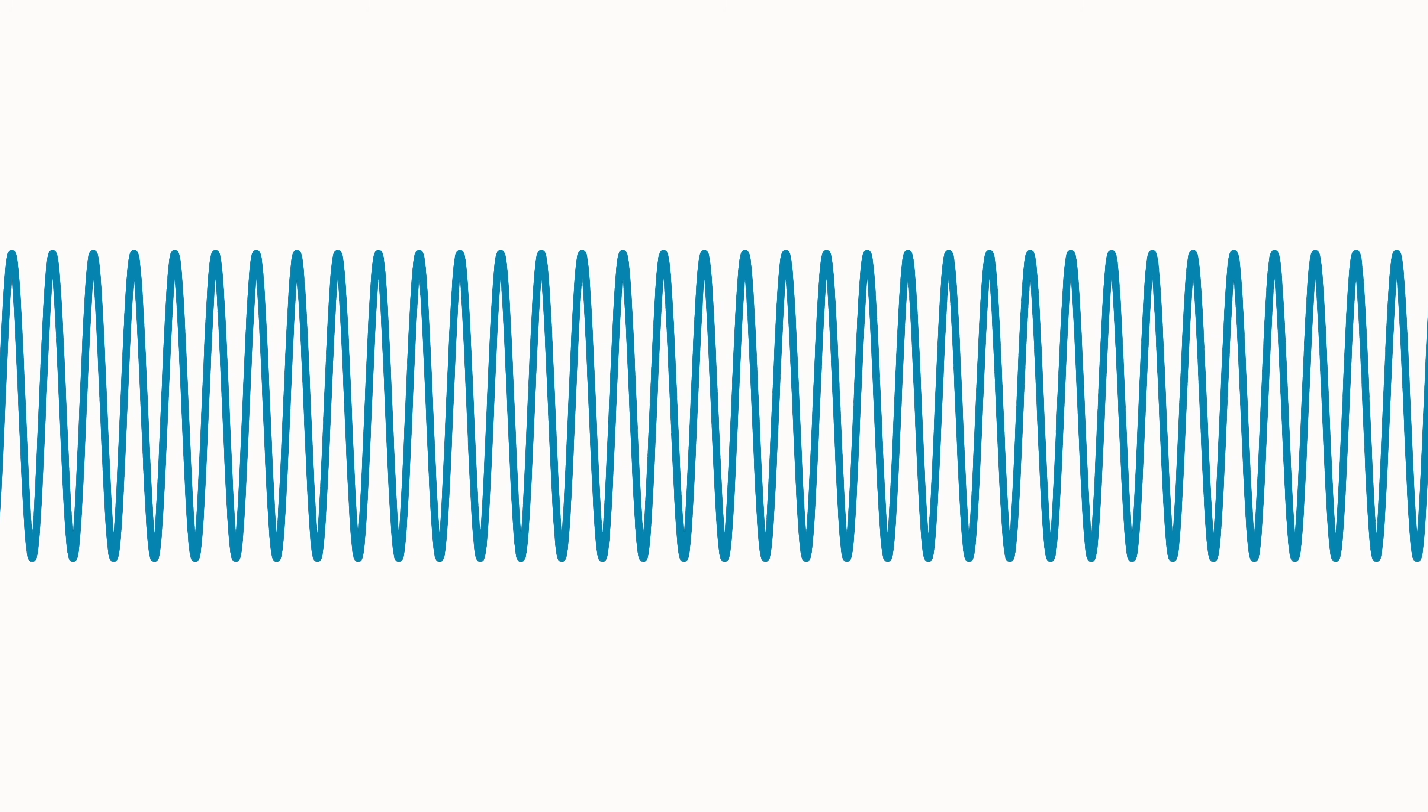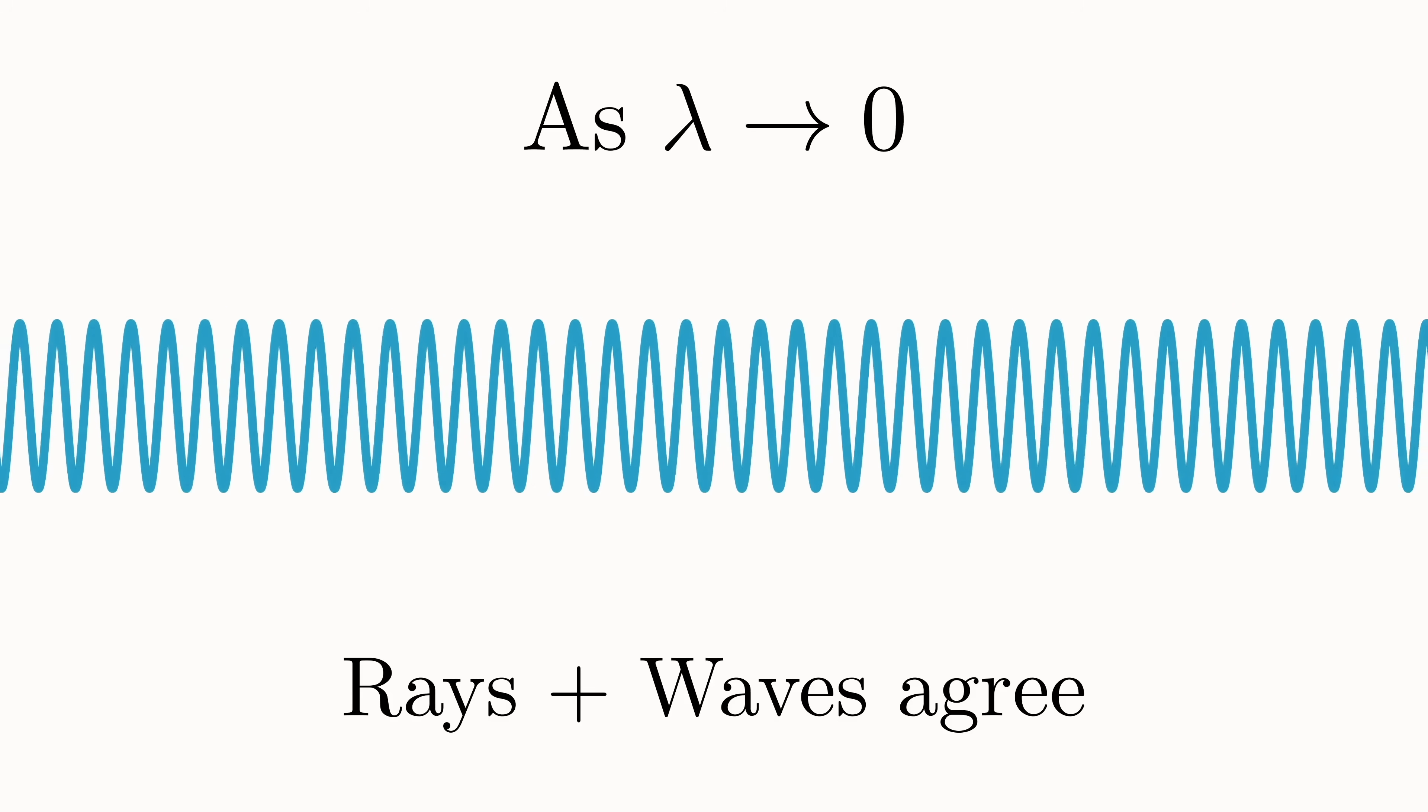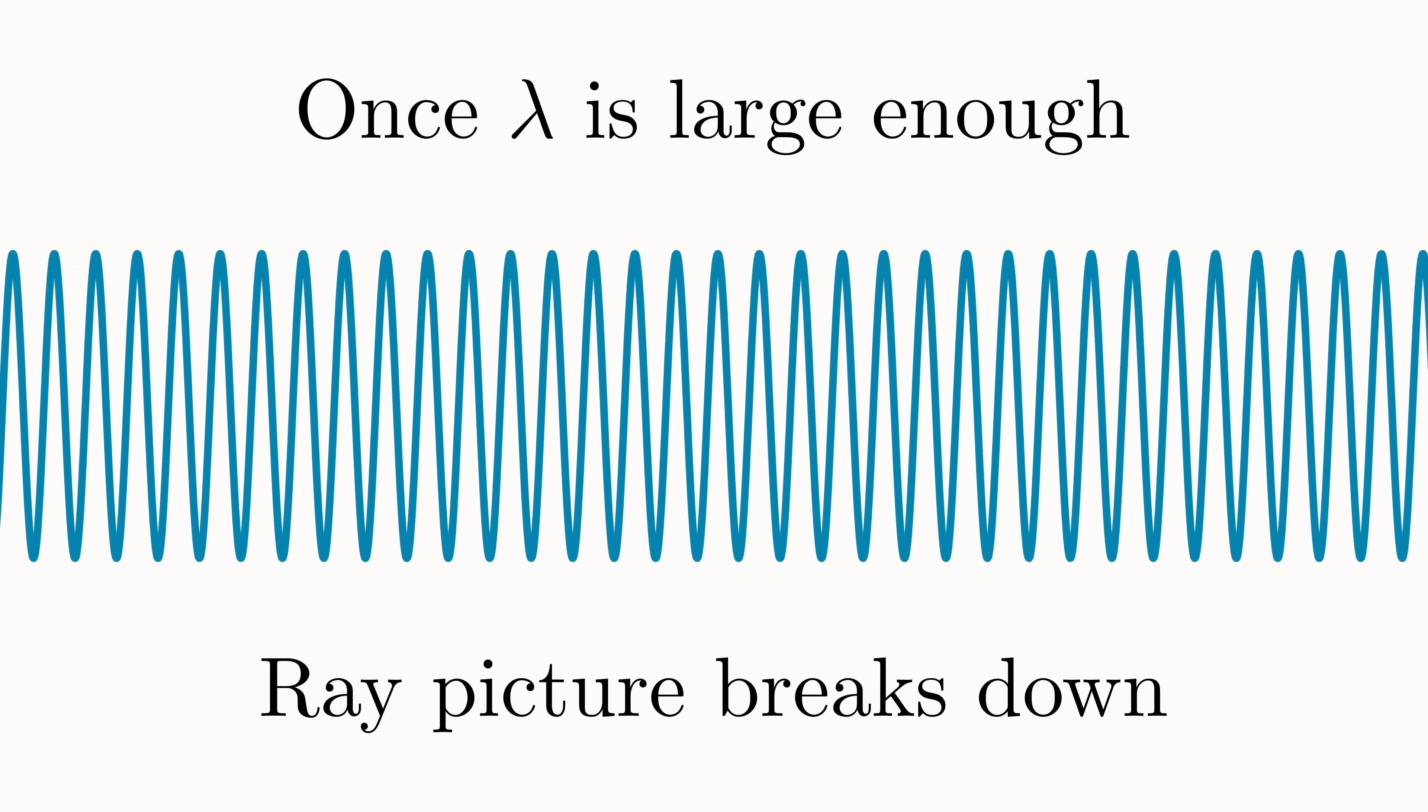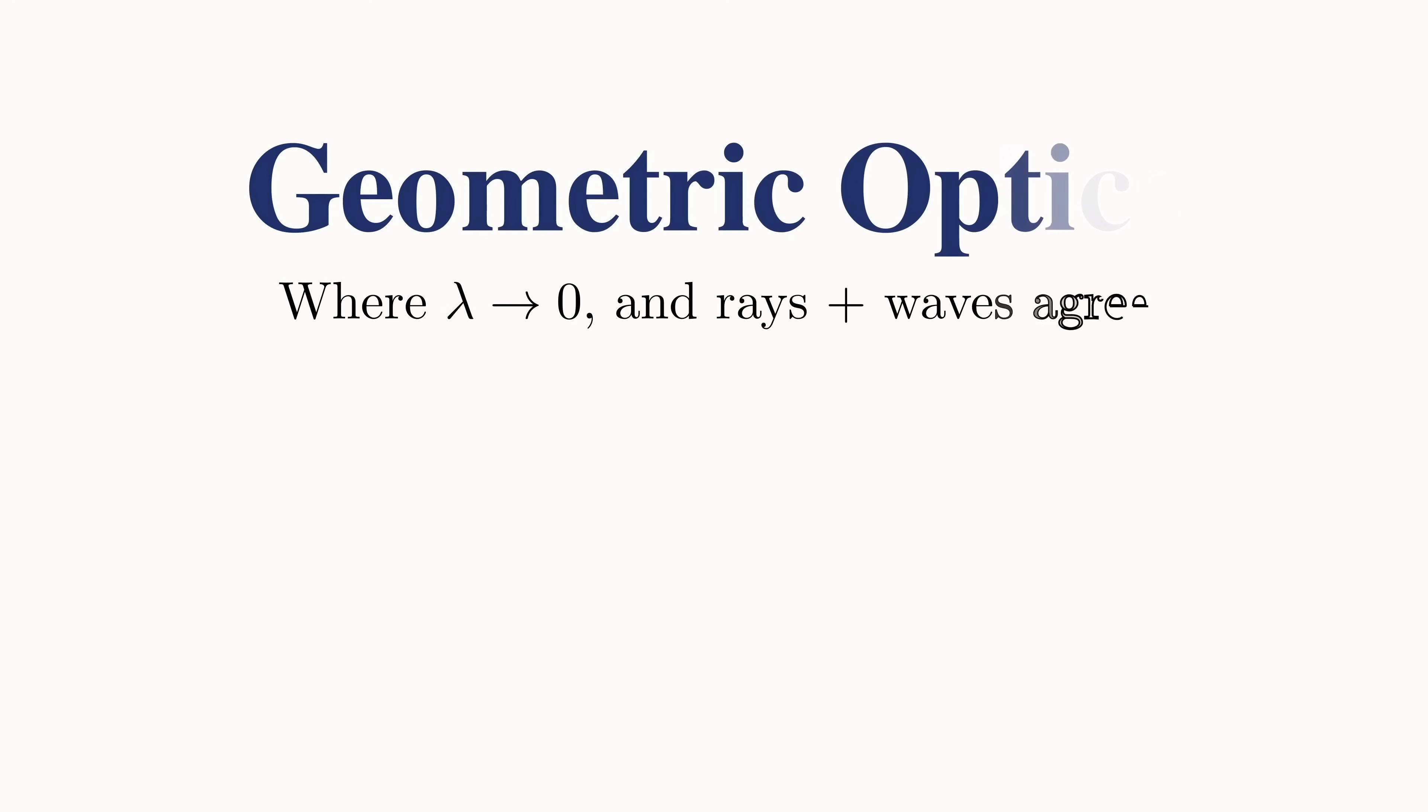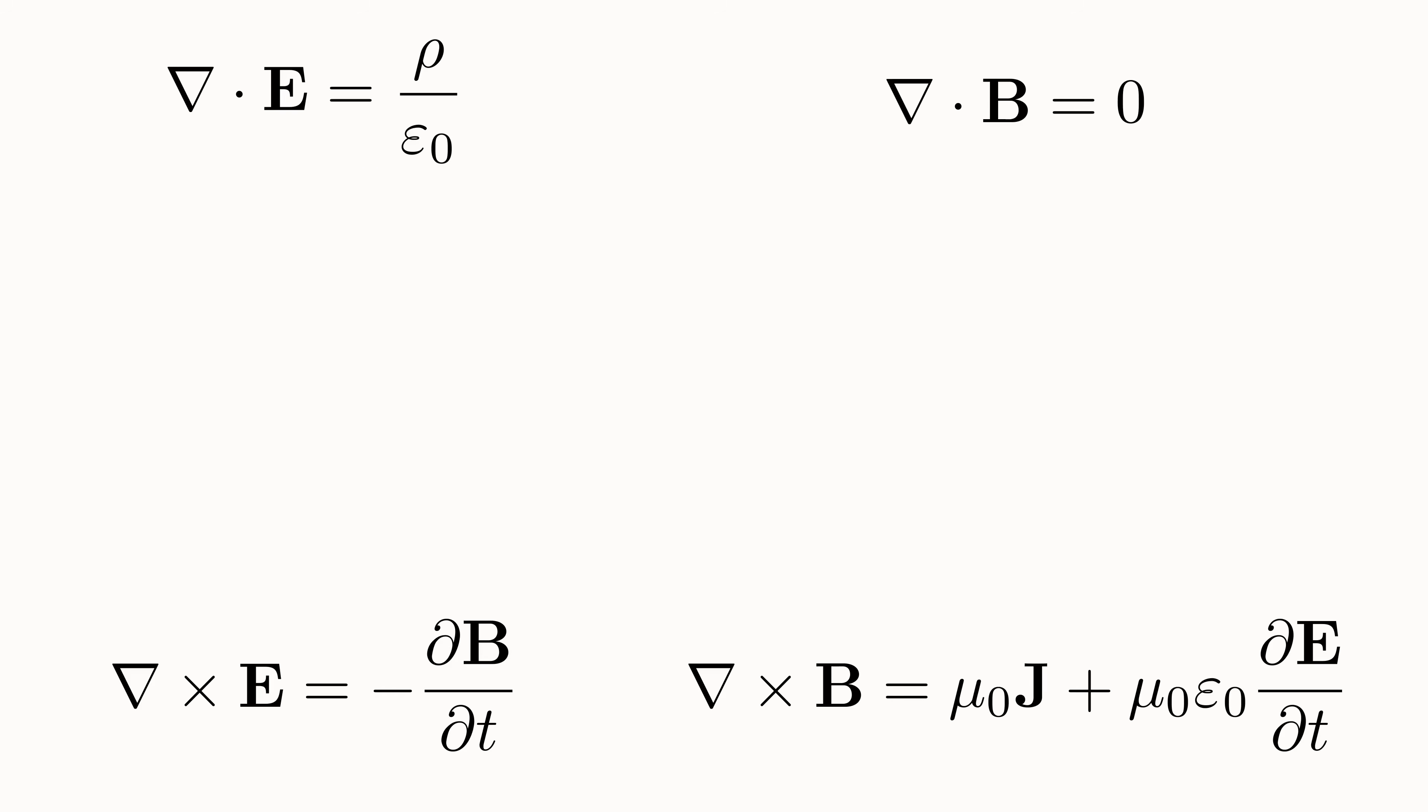In optics, only when the wavelength is short does the ray description match the wave description. As soon as the wavelengths become comparable to the path length, the ray description entirely breaks down. Certain features that rays cannot possibly explain begin to occur, and only the wave picture remains. The regime where both the wave picture and ray picture agree is called geometric optics, and the much broader regime is referred to as wave optics or physical optics. In fact, by the early 1900s, Maxwell's equations were already used to show that a light wave must satisfy this wave equation.